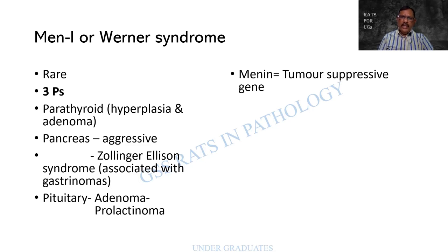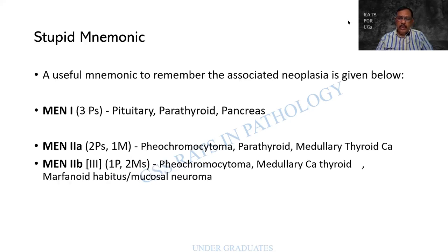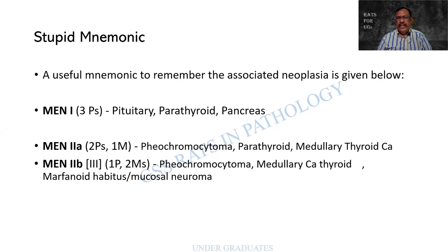MEN1 is associated with the menin gene, which is a tumor suppressor gene. A useful mnemonic: MEN1 has three P's — Pituitary, Parathyroid, and Pancreas. MEN2a has two P's and one M. MEN2b has one P and two M's — quite easy to remember, and this is also given in tabular form.